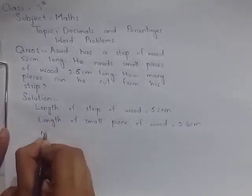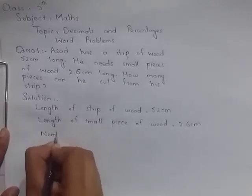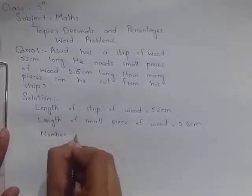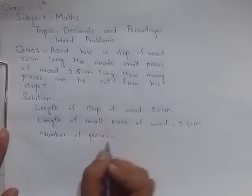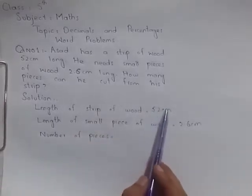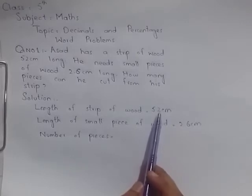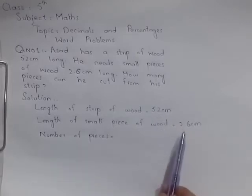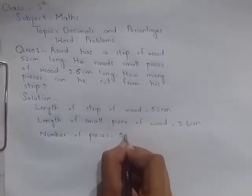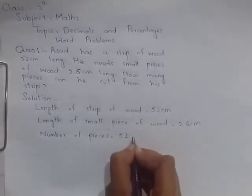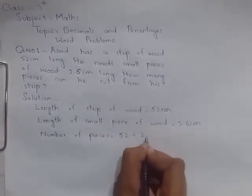Here I write: number of pieces is equal to... Number of pieces is equal to... Jo humne total length hai strip ki, jo humne divide karenge jo small piece ki length hai usse, to humne number of pieces aa jayenge. So students, here I write: 52 divided by 2.6.